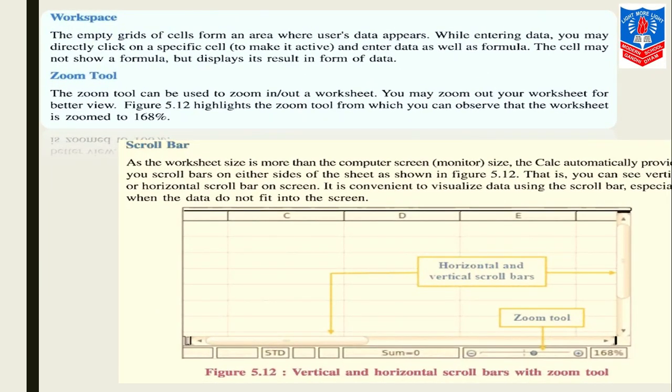Now we talk about workspace. The empty grid of cells forms an area where user data appears. While entering data, you may directly click on a specific cell to make it active and enter data as well as formulas. The cell may not show a formula but displays its result in the form of data. Now we talk about the zoom tool. The zoom tool can be used to zoom in or out a worksheet. You may zoom out your worksheet for a better view. Here in this image you can see it highlights a zoom tool from which you can observe that the worksheet is zoomed to 168%.